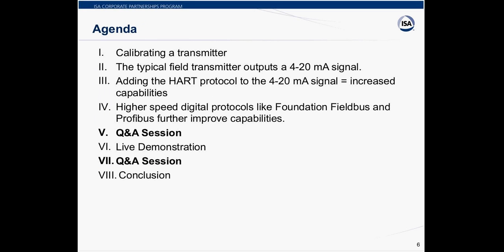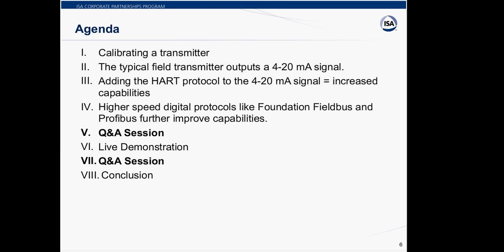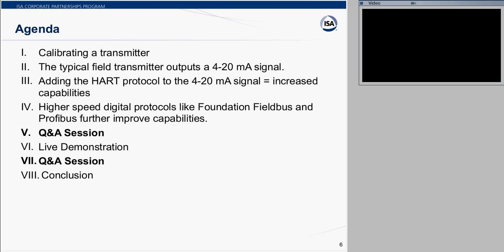Tom, if you'd like to go ahead and go over the agenda. Today we'll be talking about how to calibrate a smart transmitter, and we're also going to do a quick review of the standard 4 to 20 milliamp output field transmitter, talk a little bit about the HART protocol and how a HART smart transmitter creates increased capabilities on the 4 to 20 milliamp loop. We'll talk about the physical layer of Profibus PA and Foundation Fieldbus H1 transmitters, and sources of error that affect all of these transmitter types. Then there will be a Q&A session, after which Roy will give a live demonstration of how to calibrate some smart transmitters, another Q&A session, and then the conclusion.